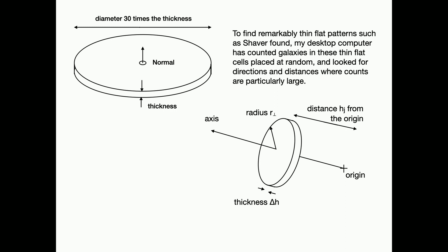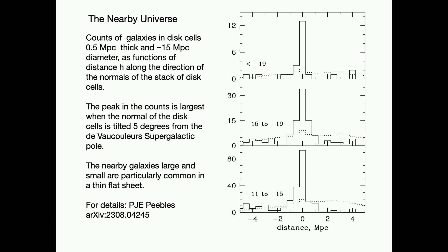A little detail. I choose an axis from the origin. I place these disk cells with the normal along this axis, and I stack them. I put one in the origin and ten to the left, ten to the right. Now the game is simply choose a random direction for that axis, count the objects in each of the 21 cells, and record the result when the count in one of the cells is unusually large.